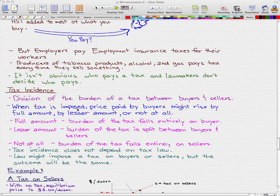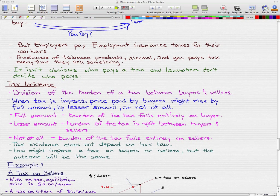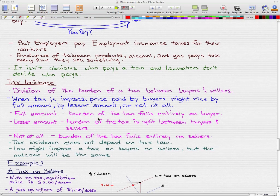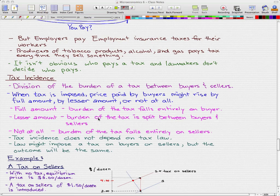Full amount means the burden of the tax falls entirely on the buyer. Lesser amount means the burden of the tax is split between buyers and sellers. Not at all means the burden of the tax falls entirely on the seller.